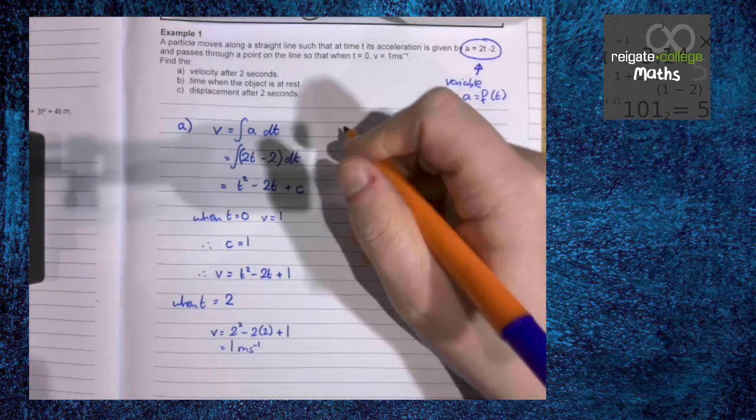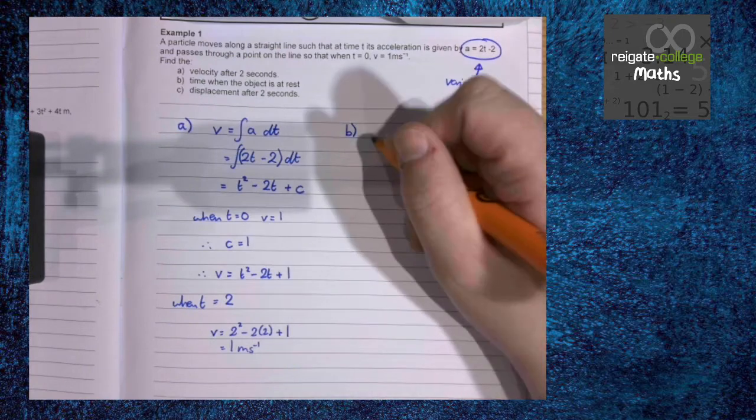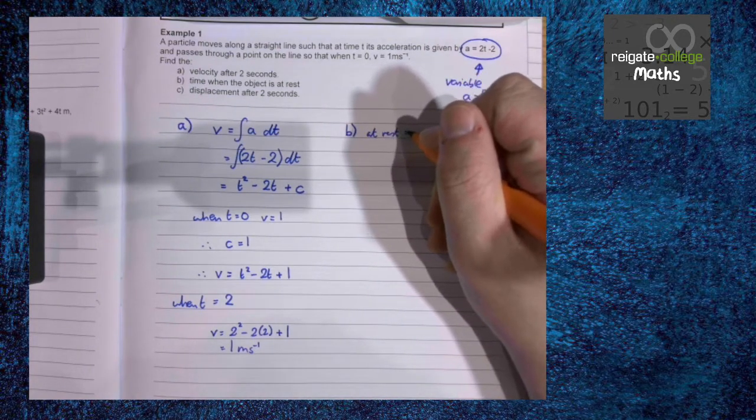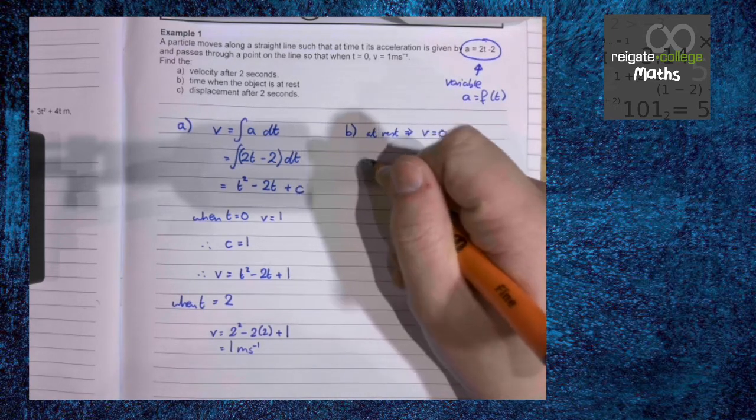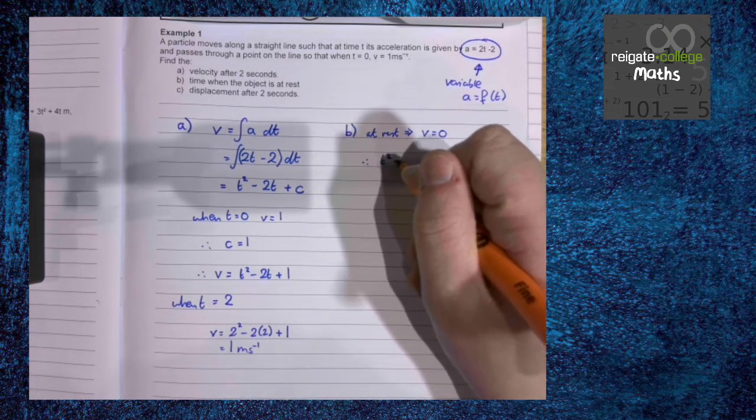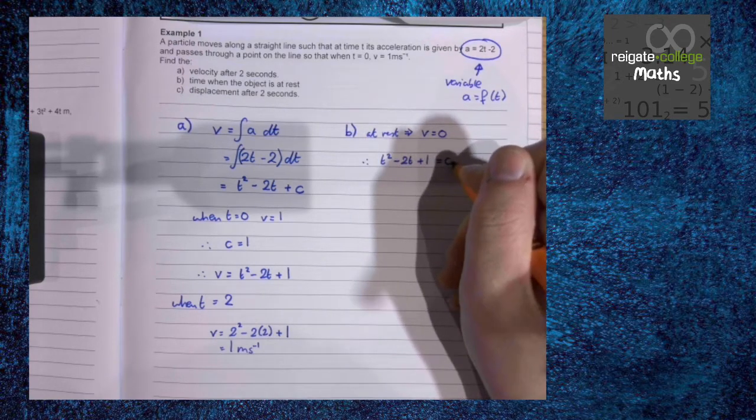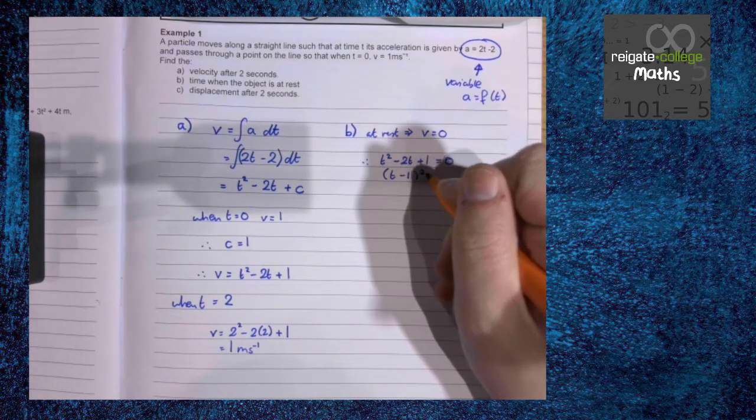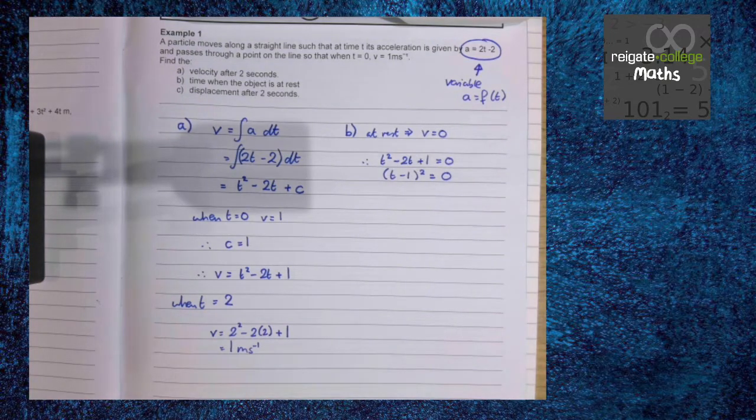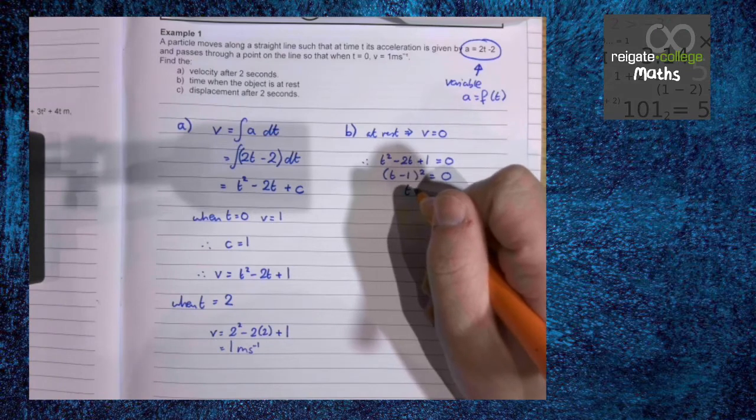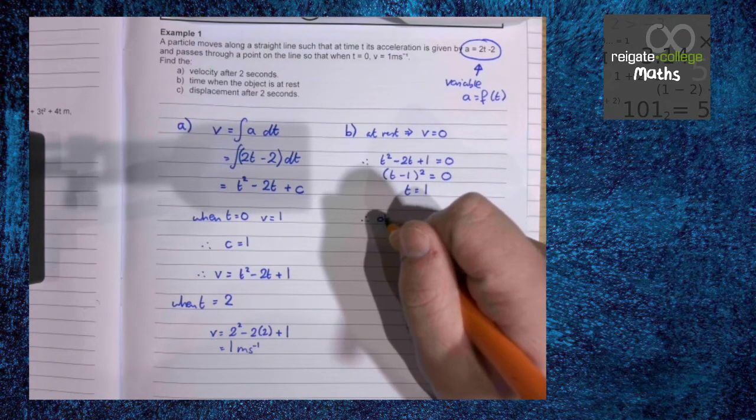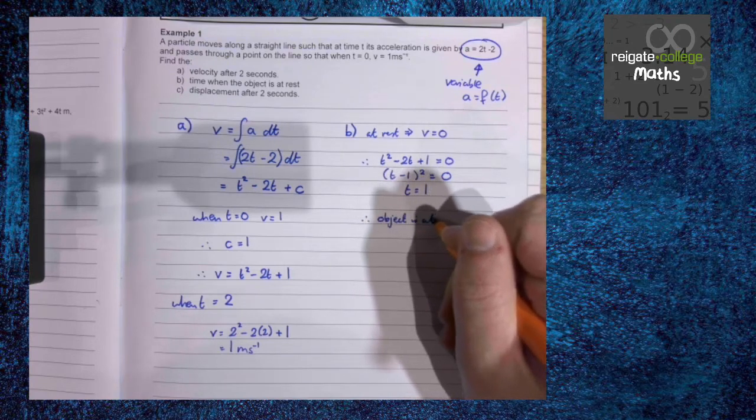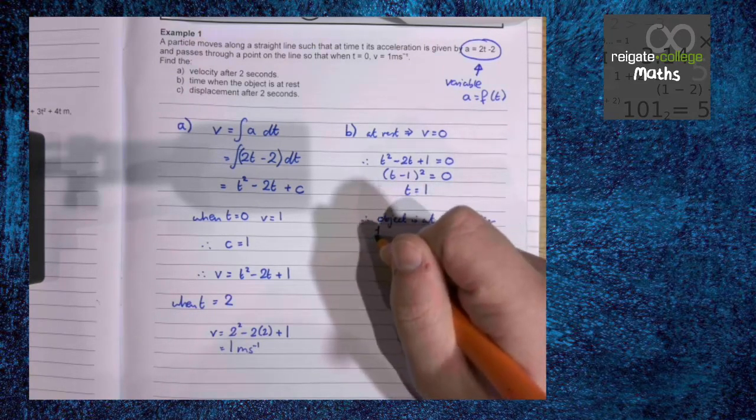Part b: find the time where the object is at rest. We know it's at rest tells us that the velocity is 0. So therefore t squared minus 2t plus 1 equals 0. In this case we only have one time where the velocity is 0, so only one time where the object is at rest. Therefore the object is at rest after 1 second.